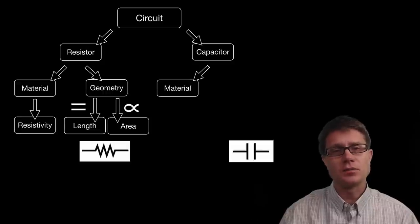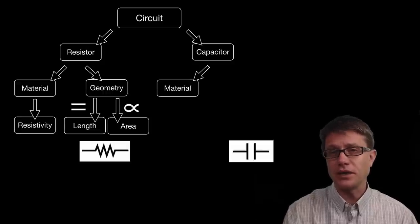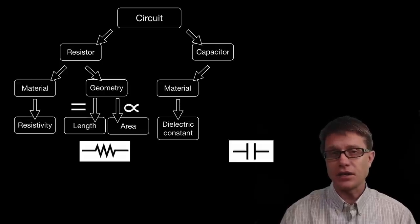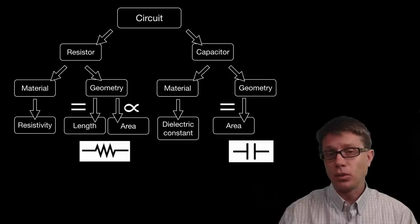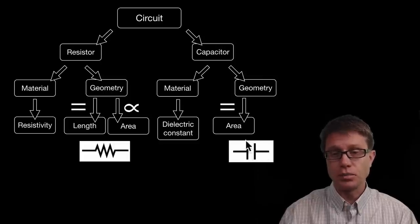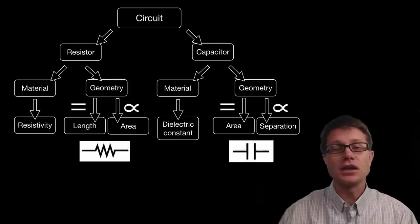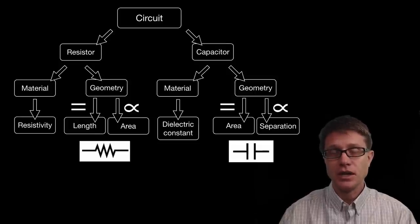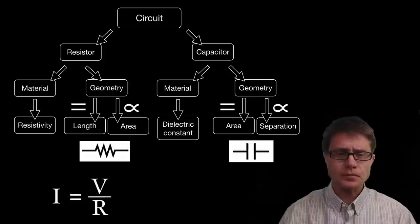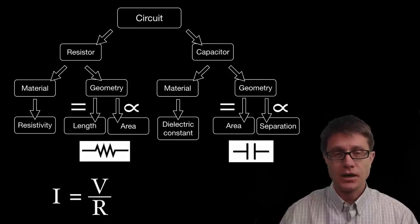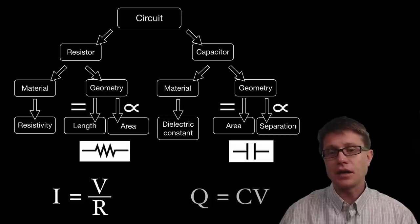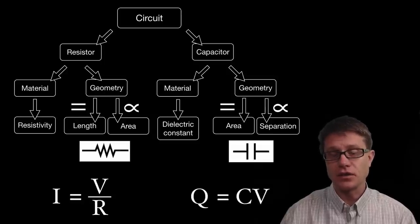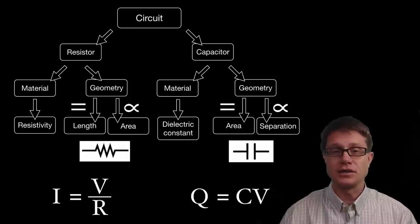A capacitor's performance is based on the material between its two plates, called the dielectric. The higher the dielectric constant, the greater the capacitance. Geometry affects it as well: the larger the cross-sectional area of the two plates, the greater the capacitance. There is an indirect relationship with separation — the more narrow the gap between the plates, the greater the capacitance. To measure current through a resistor we use Ohm's law: current equals voltage divided by resistance. For a capacitor, the charge that sits on it is simply equal to the capacitance times the voltage.